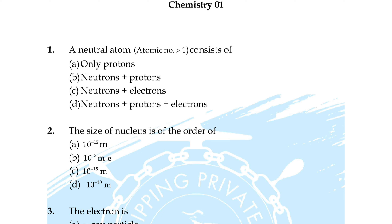Question number 21: a solution is — option A: a mixture of two components, option B: a compound of two components, option C: a homogeneous mixture of two components, option D: all of the above. Correct answer is option C: a homogeneous mixture of two components.